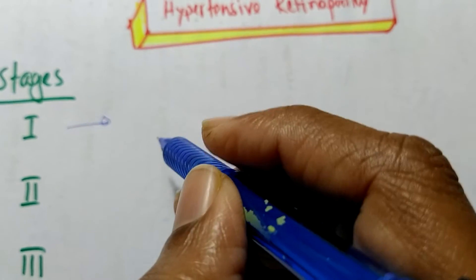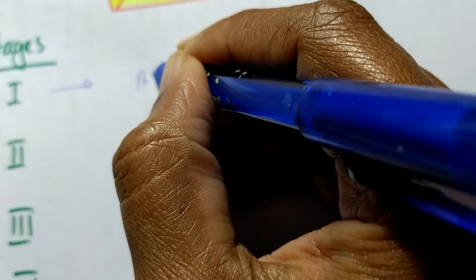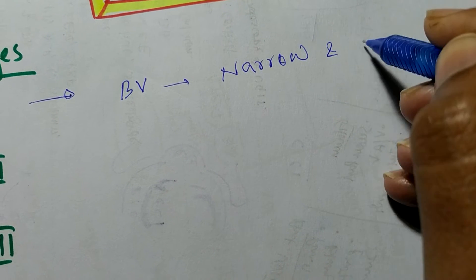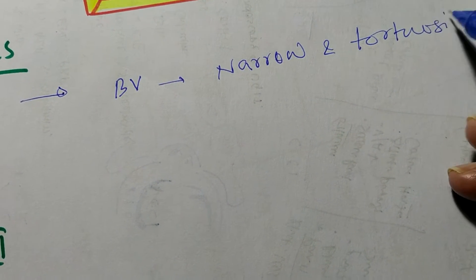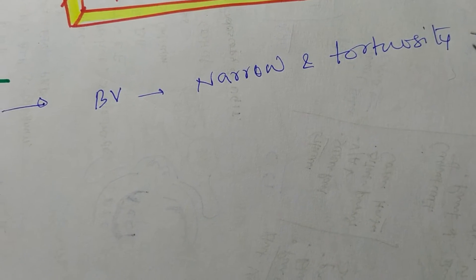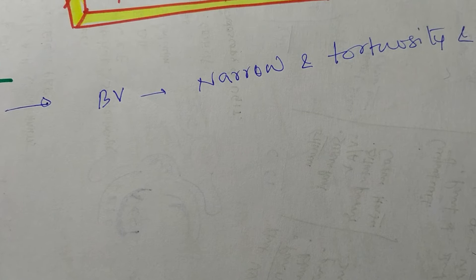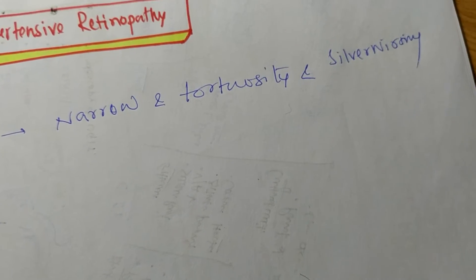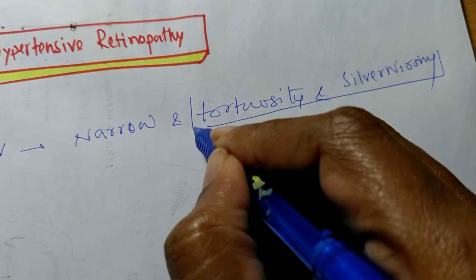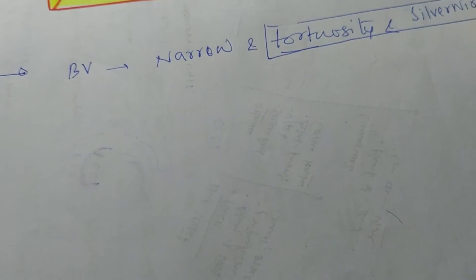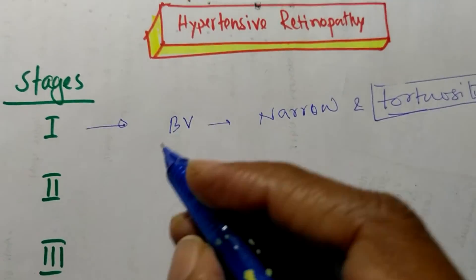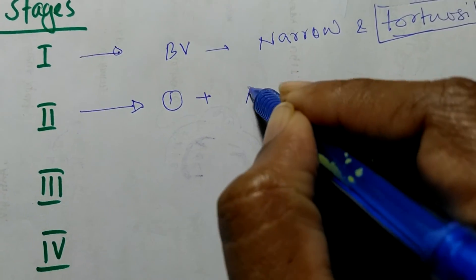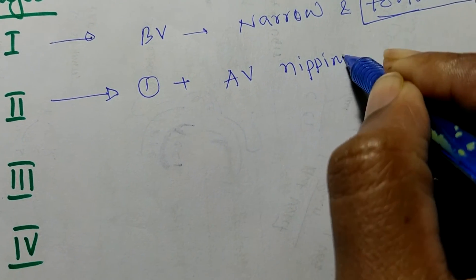Stage one hypertensive retinopathy: the blood vessels will be narrow and tortuous — tortuosity and narrowing of the blood vessel — and silver wiring. So tortuosity and silver wiring is the term for stage one.